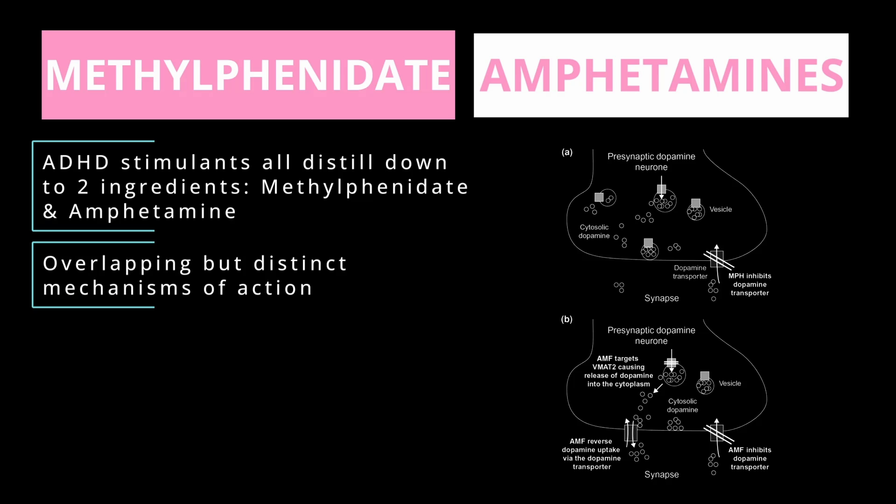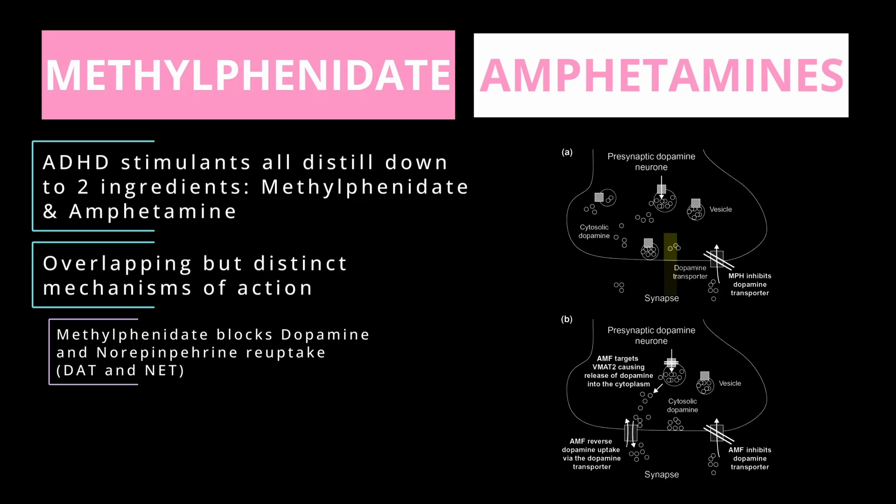Methylphenidate acts as an antagonist to dopamine and norepinephrine reuptake. Similar to how SSRIs work with serotonin, it blocks reuptake at DAT and NET, which leads to more dopamine and norepinephrine in the synapse.